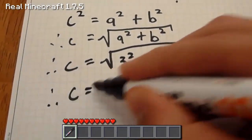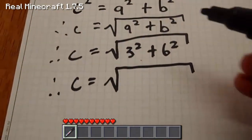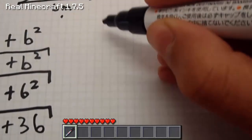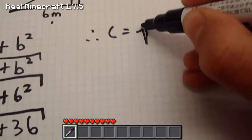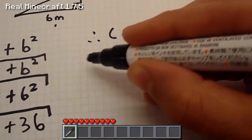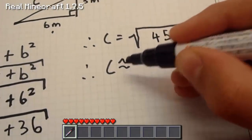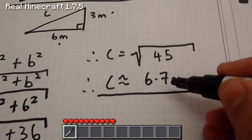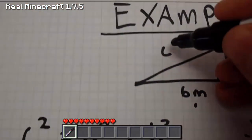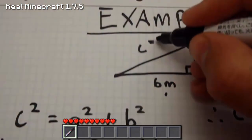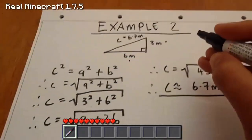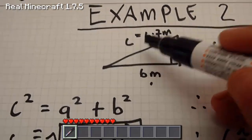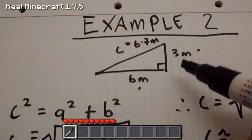Therefore C equals the square root of 9 plus 36, which is the square root of 45, so C approximately equals 6.7 metres. That's another example of how we can use the Pythagoras theorem to solve an unknown distance - in this case the hypotenuse - when you know the other two sides.